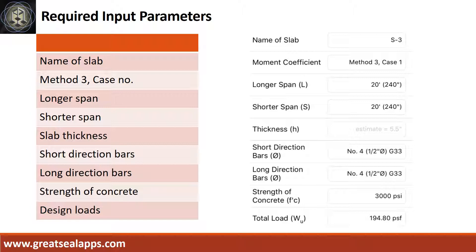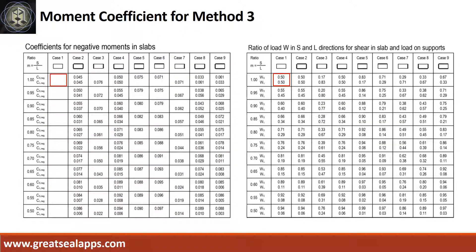Enumerate input parameters required: name of slab S3, case 1 panel design, longer and shorter span 20 feet, slab thickness 5.5 inches, main bars half-inch diameter at grade 33, strength of concrete 3,000 PSI, and total load 194.8 PSF. Use case 1 at m equals 1.